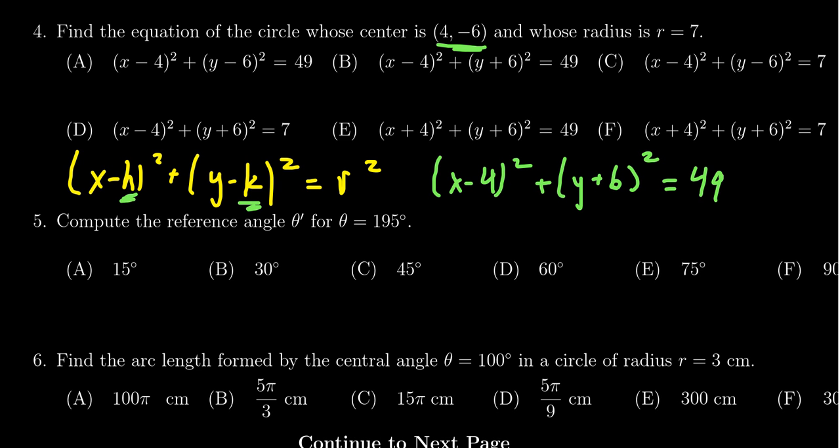So the correct answer would be (x - 4)² + (y + 6)² = 49. And so we select choice B as the correct answer.